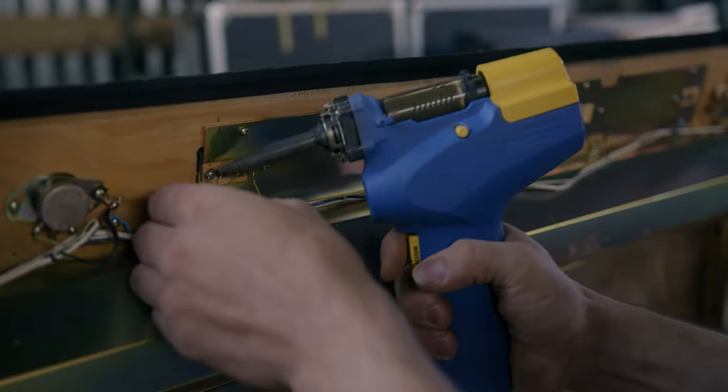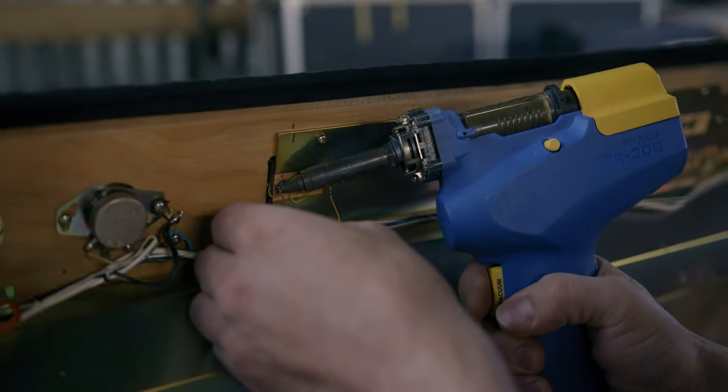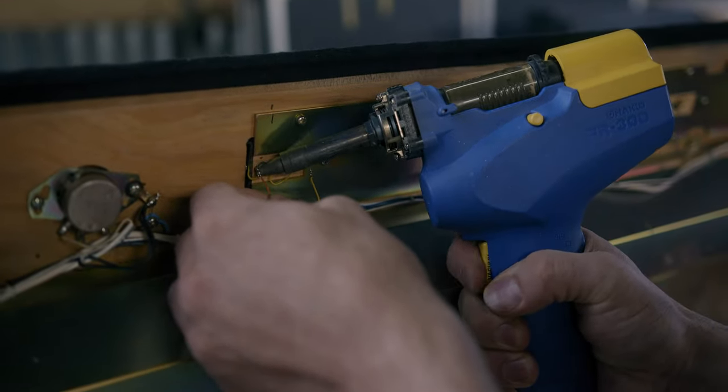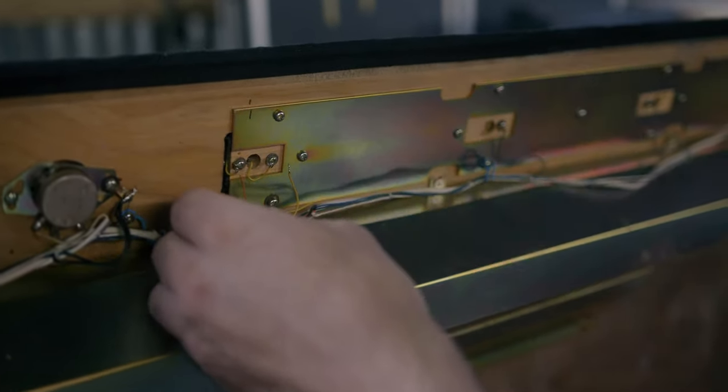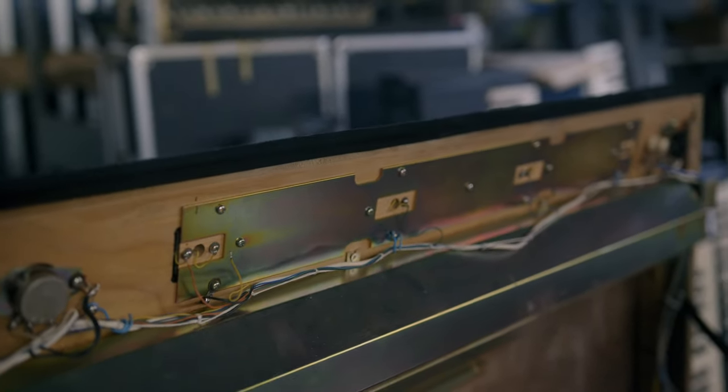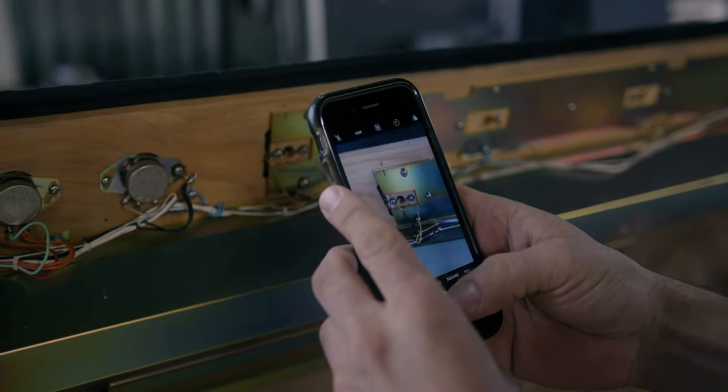Now if you don't have a soldering gun, obviously you can use solder wick or one of the manual push button spring loaded solder suckers. Now for things like this, I always like to take a quick photo because the orange is on the left and yellow is on the right.